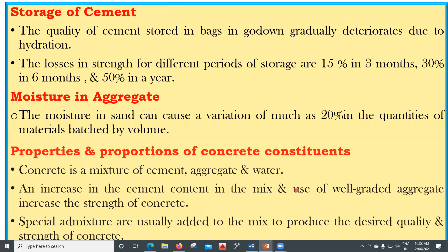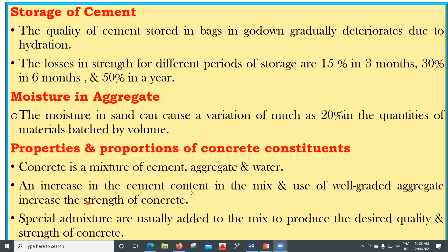Regarding properties and proportions of concrete: an increase in cement content and use of well-graded aggregate increases strength, because well-graded aggregate has fewer voids, achieving better packing and density. Special admixtures — chemical ones like plasticizers, super-plasticizers, and air-entraining agents, or mineral ones like fly ash and GGBS — are added to produce desired quality and strength, allowing high strength and workability at lower water-cement ratios.